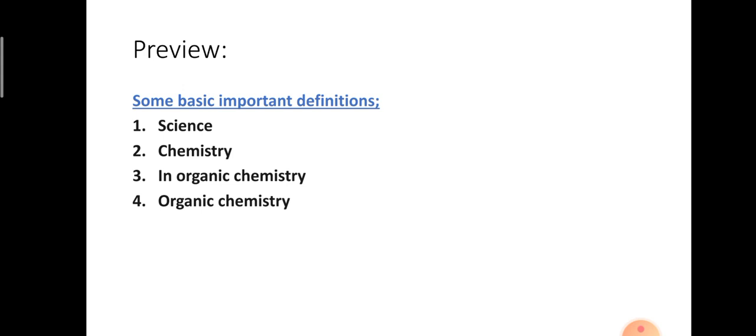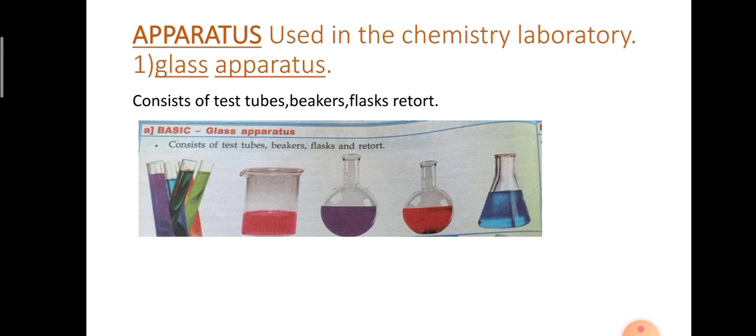In this class, let us talk about some apparatus — whatever glass apparatus we use in a chemistry laboratory. The glass apparatus consist of test tubes, beaker, flasks and retort.